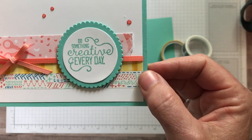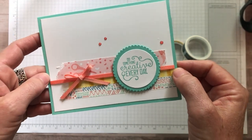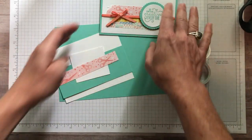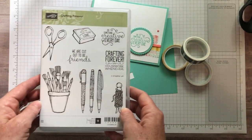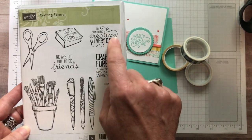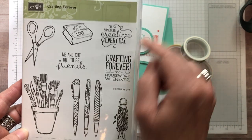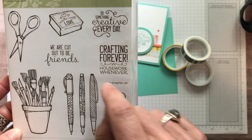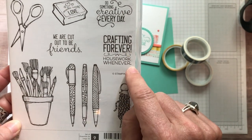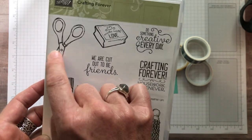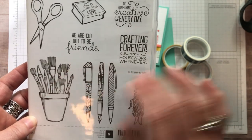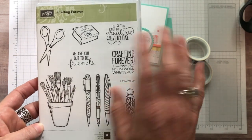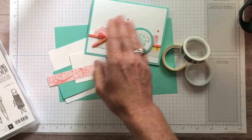And then that super cute stamp, that Do Something Creative Every Day. I love this stamp set. I also love that I can pull product that I've had for a while. This Crafting Forever stamp set with that Do Something Creative Every Day stamp. It says Made With Love, Crafting Forever Housework Whenever, and we are cut out to be friends with scissors and other fun crafting imagery. This is a stamp set that we have had for quite a while and I love to pull out something I've had for a while and incorporate it with our new products.